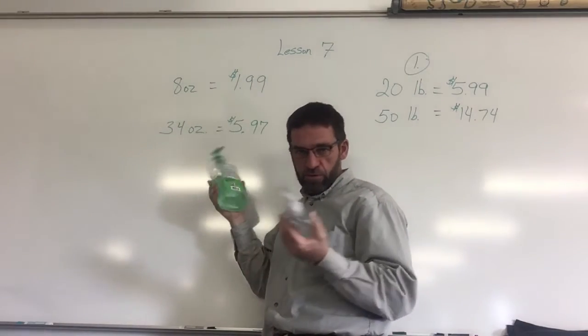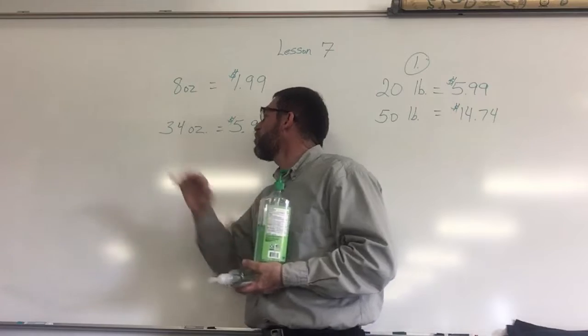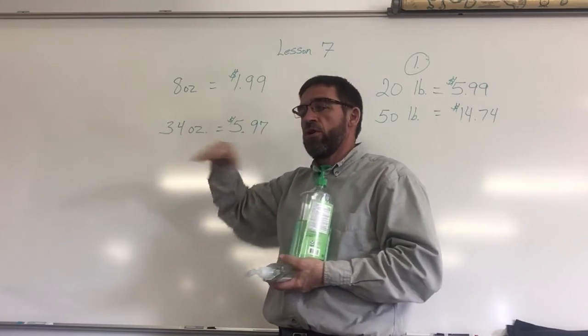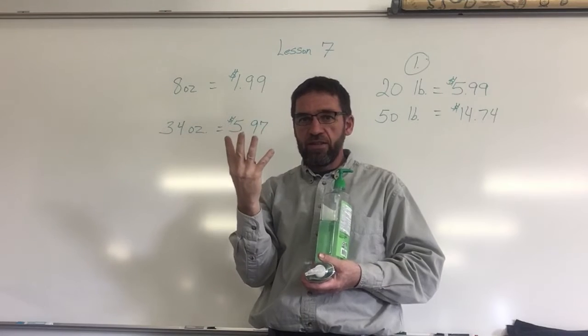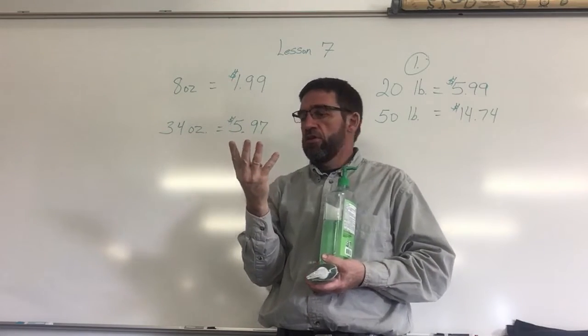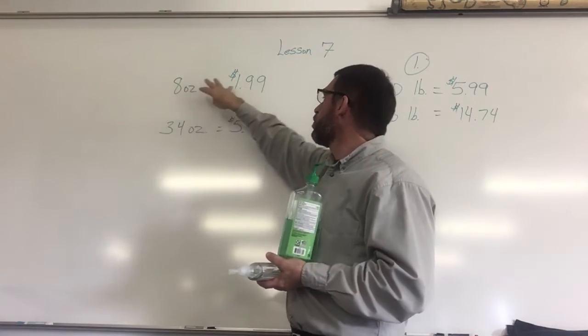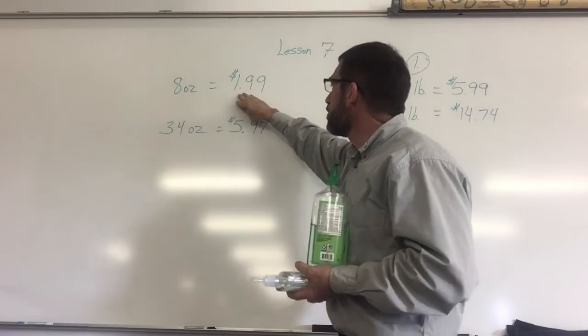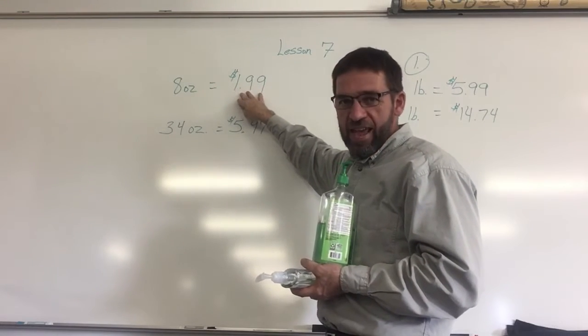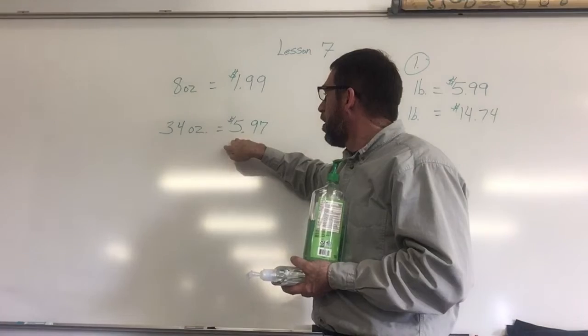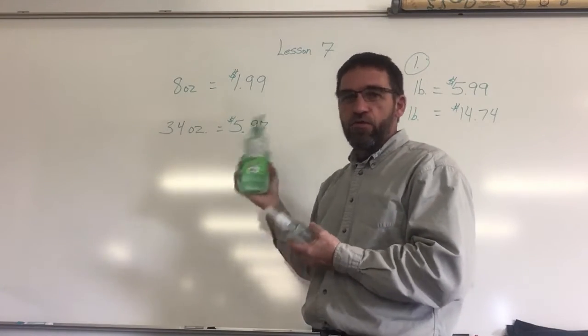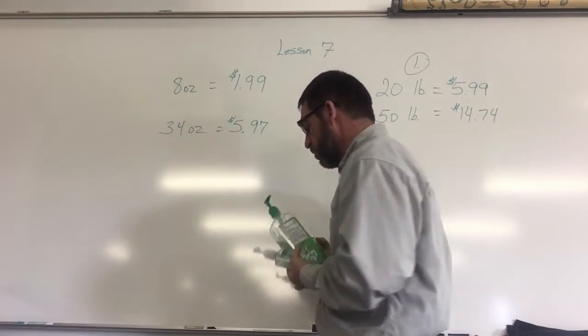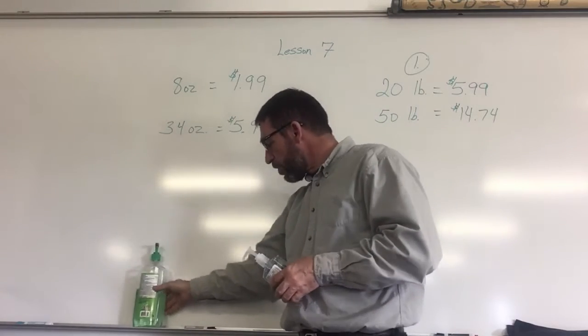I'm going to say 8 into 34 would be 4 times - four 8s are 32. So this one here, four times this price - two times four is eight dollars. Oh, eight dollars? No, this just cost six dollars. So the big one again is the cheapest.